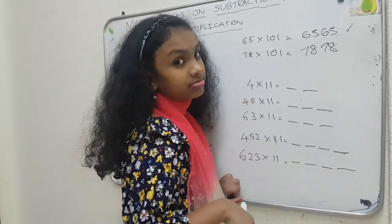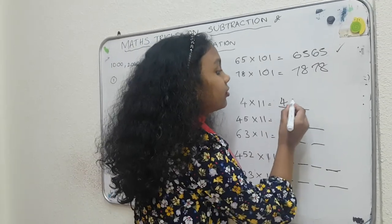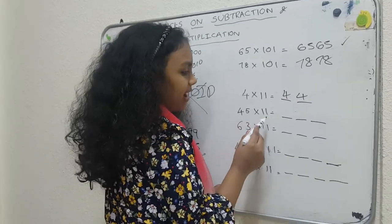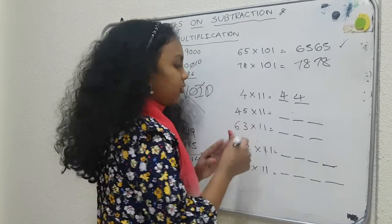4 times 11 is 44. Everybody knows that. Some people don't. So, 45 times 11. This is a trick.